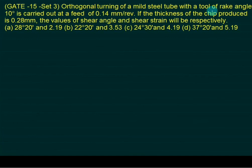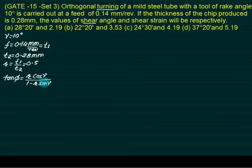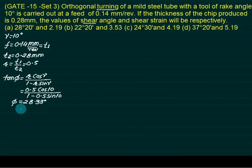In orthogonal turning of a mild steel tube with a tool of rake angle 10 degrees, the feed equals 0.14 mm/rev (taken as T1), and the chip thickness T2 equals 0.28 mm. The chip thickness ratio R equals T1/T2 equals 0.14/0.28 equals 0.5. Using tan(φ) equals R·cos(γ)/(1 minus R·sin(γ)) equals 0.5·cos(10°)/(1 minus 0.5·sin(10°)), we get φ equals 28.33 degrees, or 28 degrees and 20 minutes.